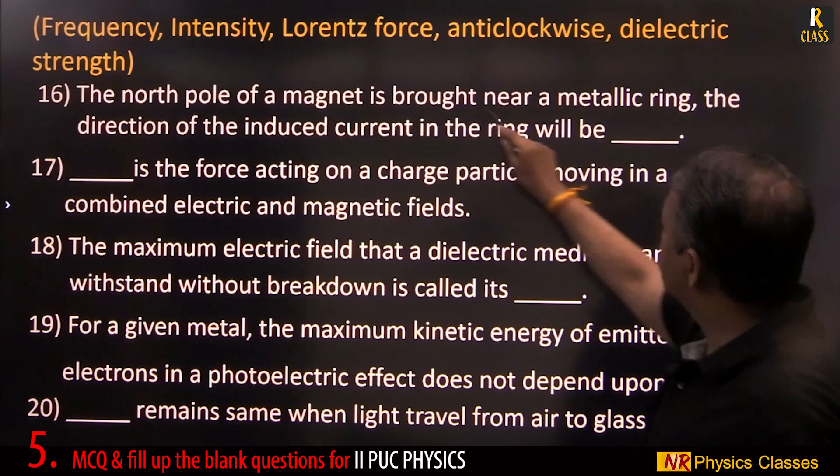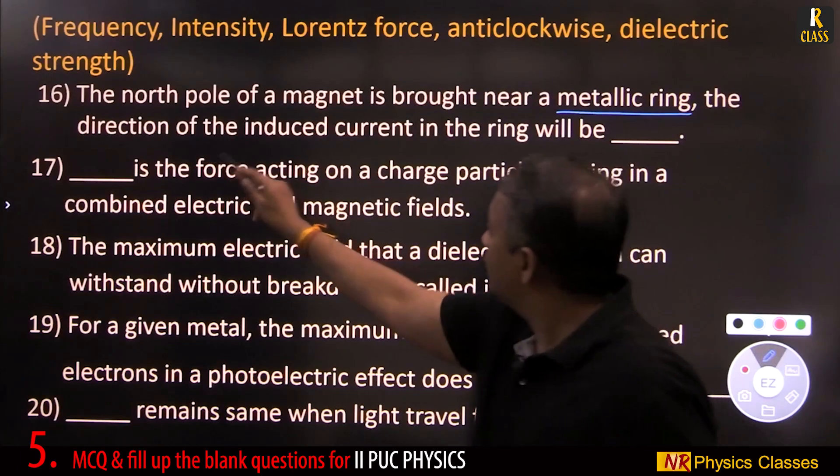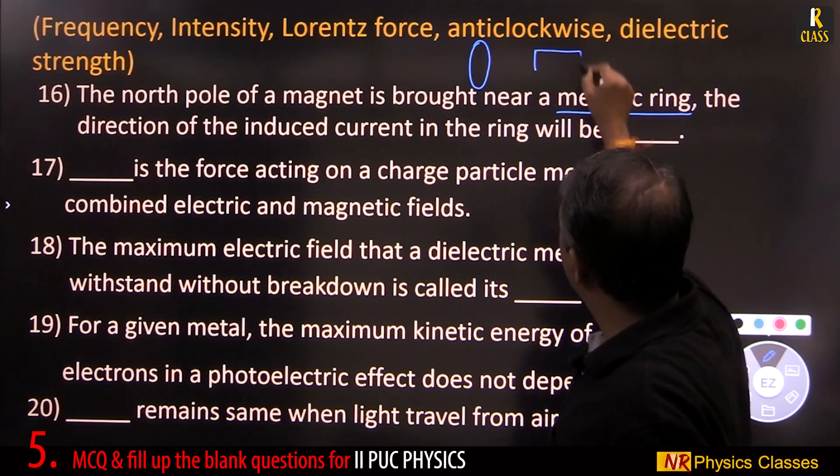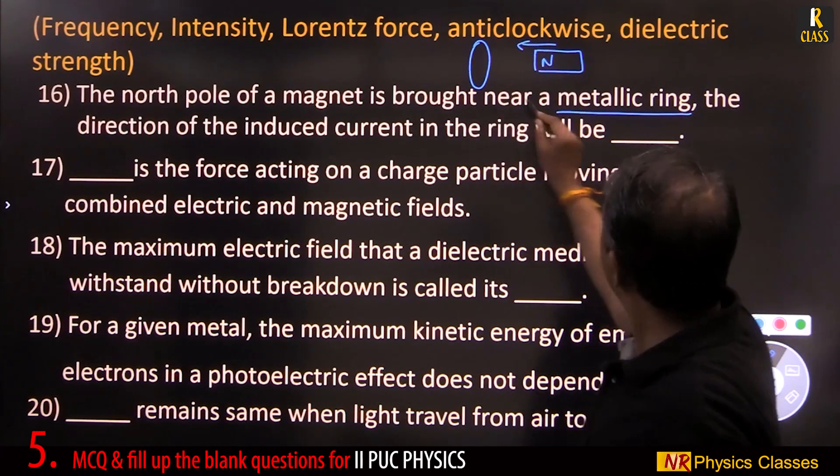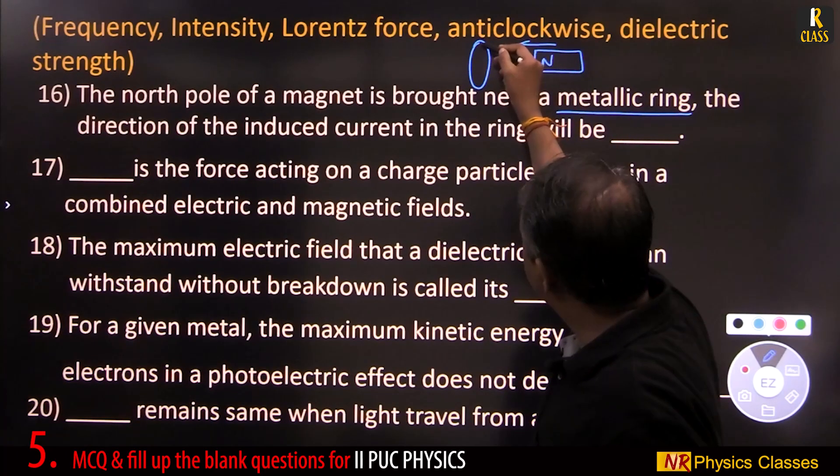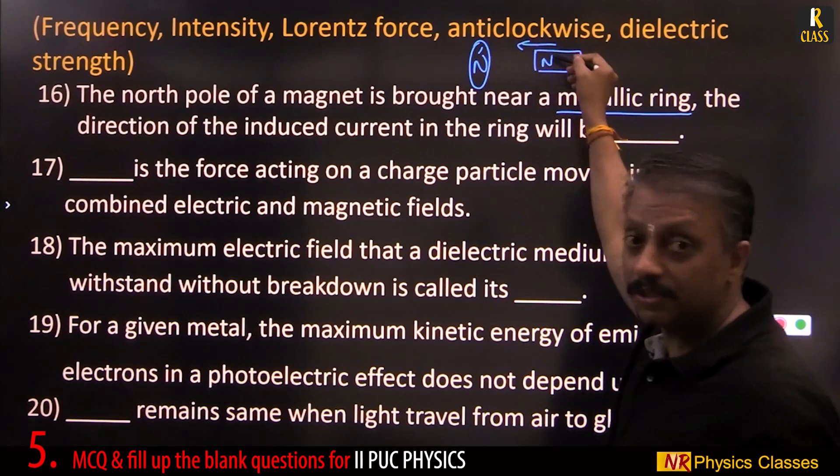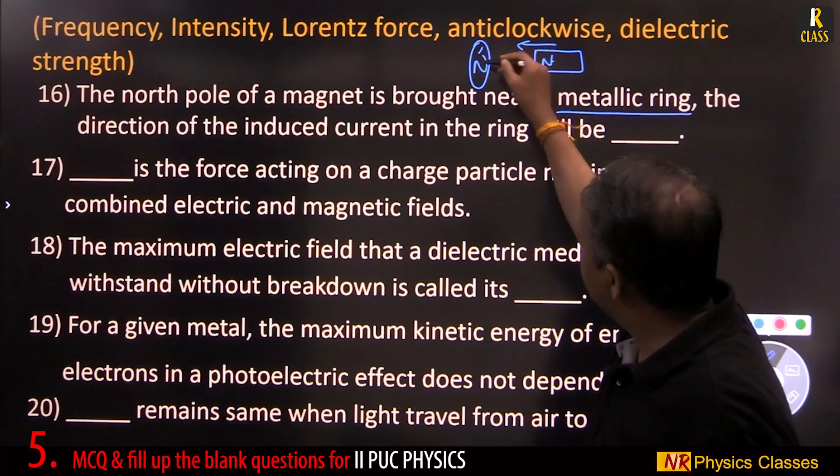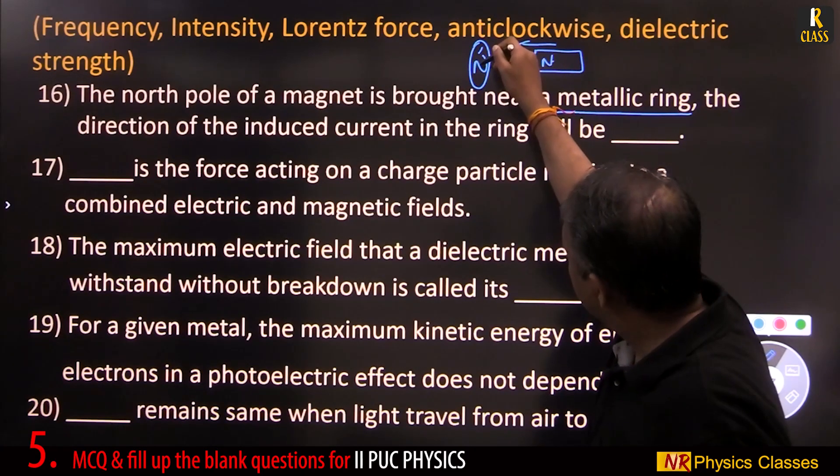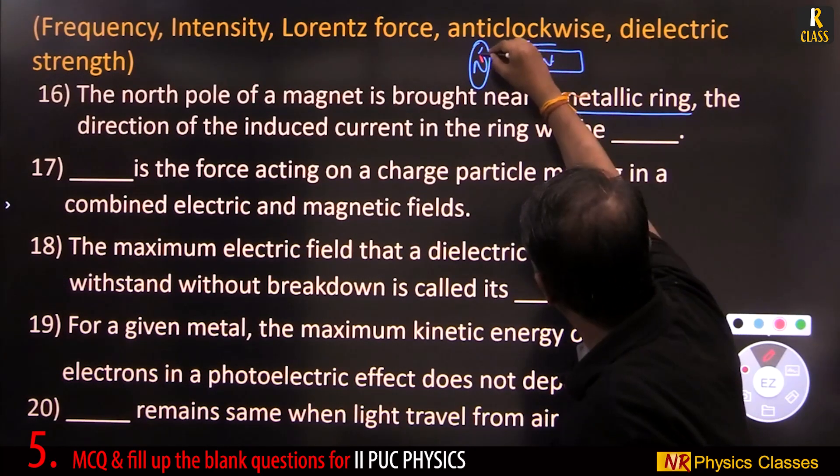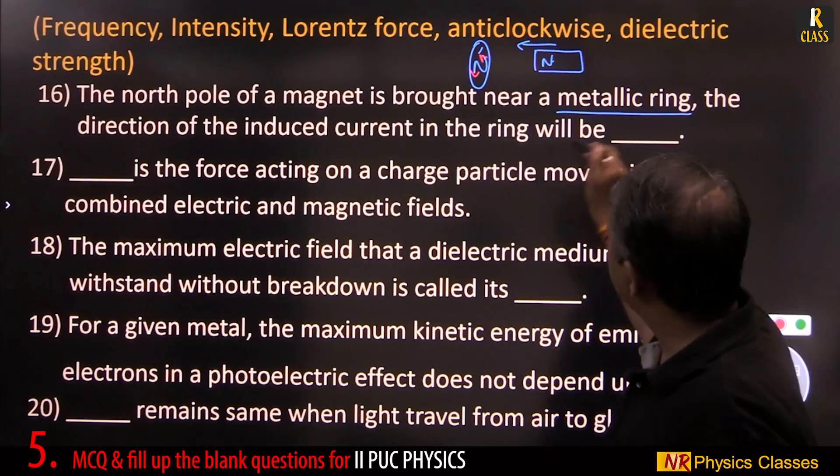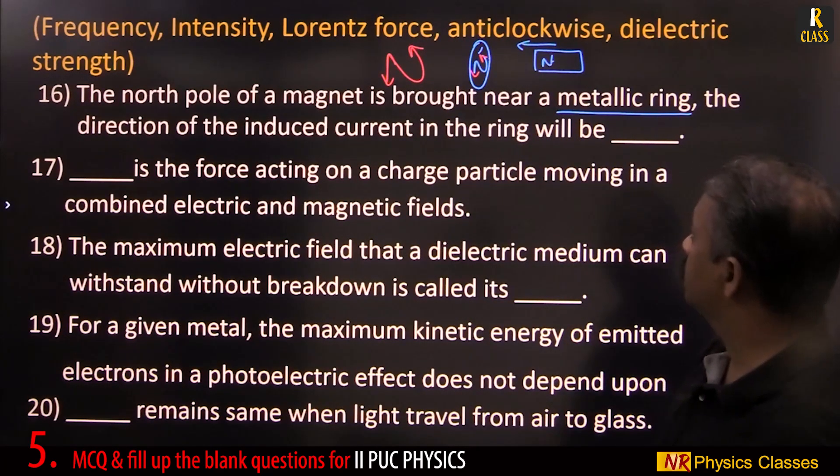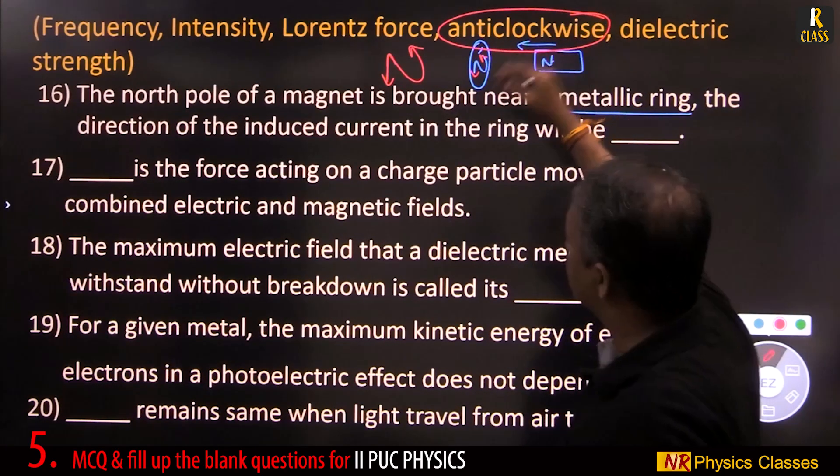North pole of a magnet is brought near a metallic ring. The direction of induced current in the ring will be - this is the ring. North pole is brought near means this face should behave like north, because this north can oppose this north. Lenz's law says it always opposes the cause. You are bringing north pole means this ring behaves like north pole. And direction of current is anti-clockwise. North pole means anti-clockwise.